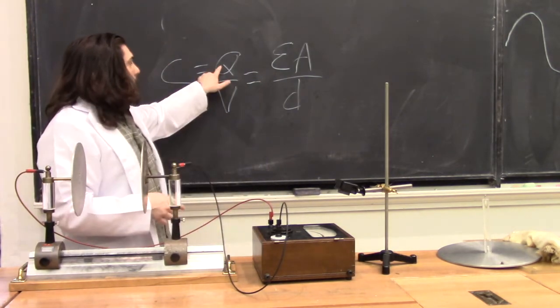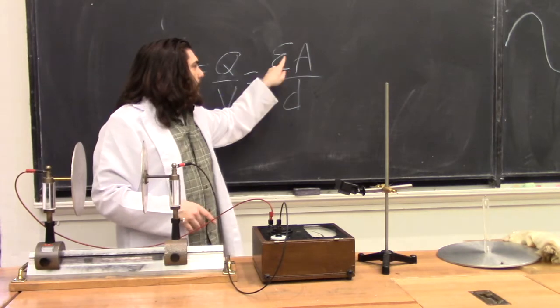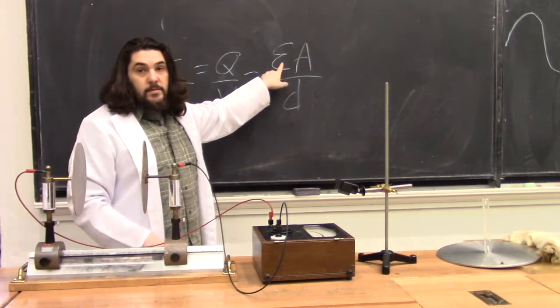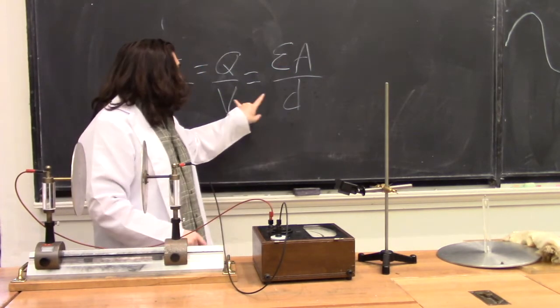That way it will be holding Q, A, and epsilon constant, which means the only things that can change are V and D.